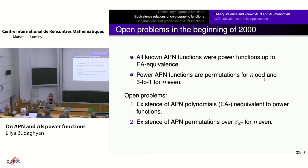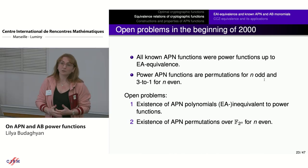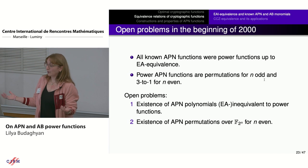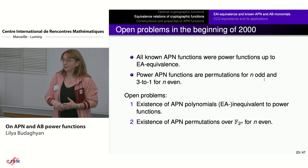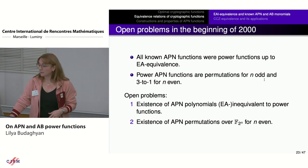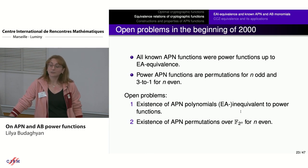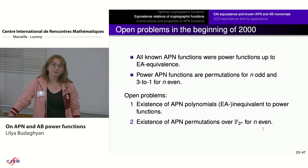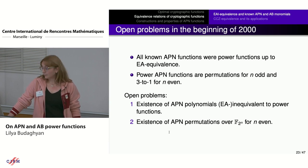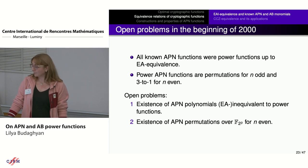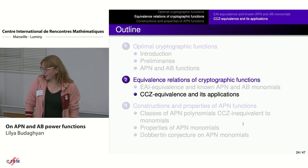I started my work on APN and AB functions in 2003. At that time, all known APN functions were power functions up to EA equivalence, and power APN functions are permutations for n odd and 3-to-1 for n even. Two big open construction problems were: the existence of APN polynomials EA-inequivalent to power functions, and the existence of APN permutations over F_{2^n} for n even. For both cases, it was strongly believed that these functions do not exist.